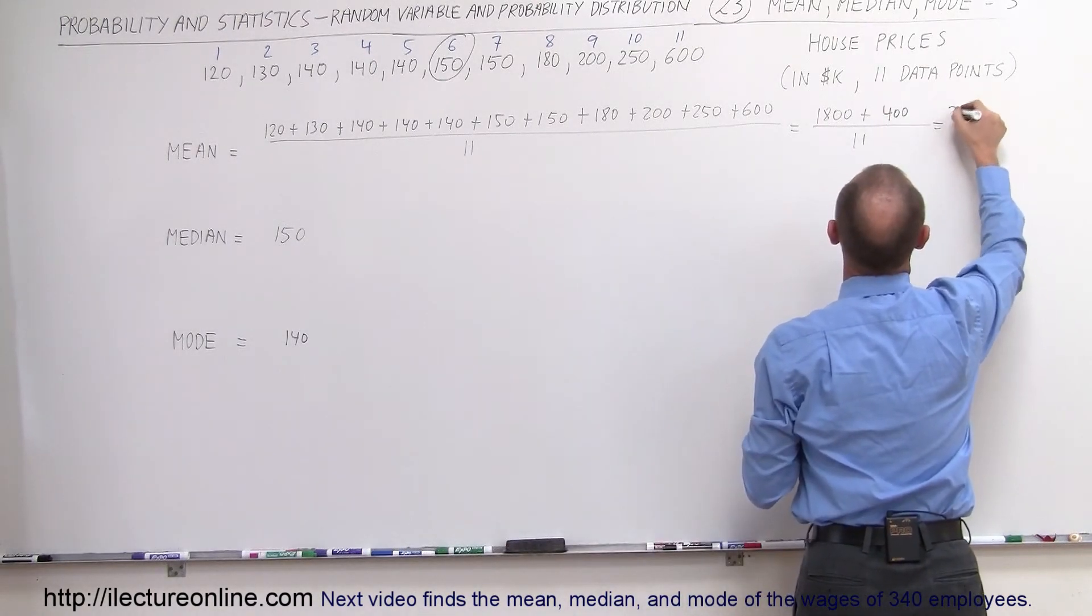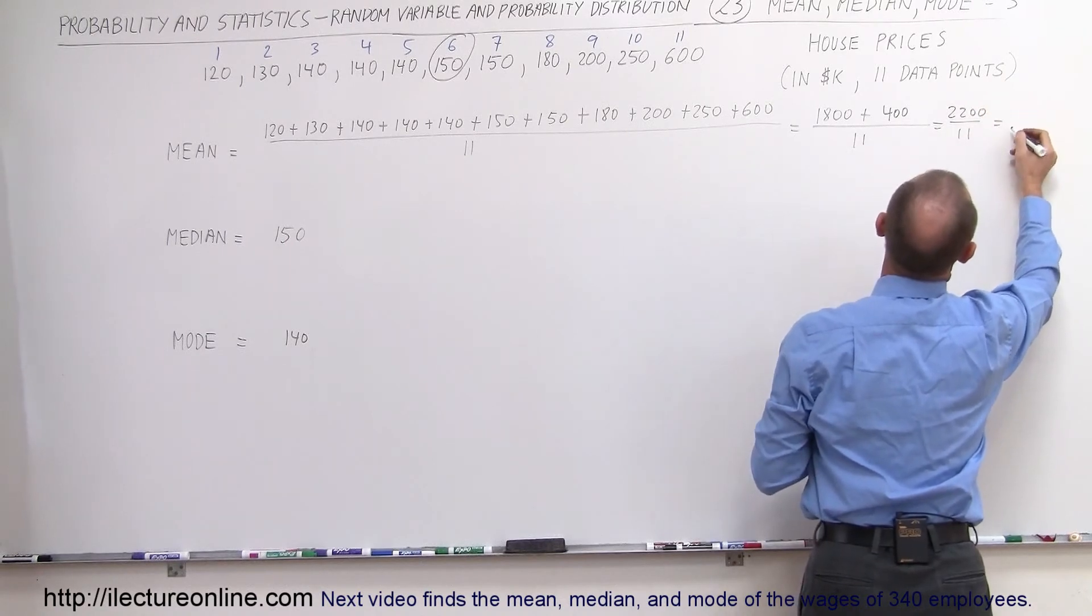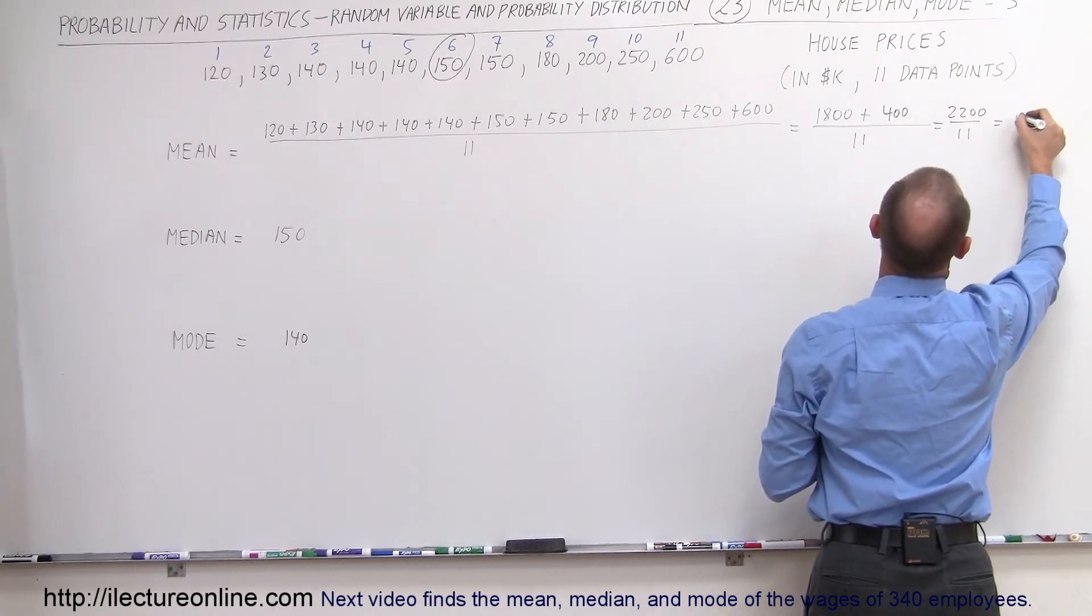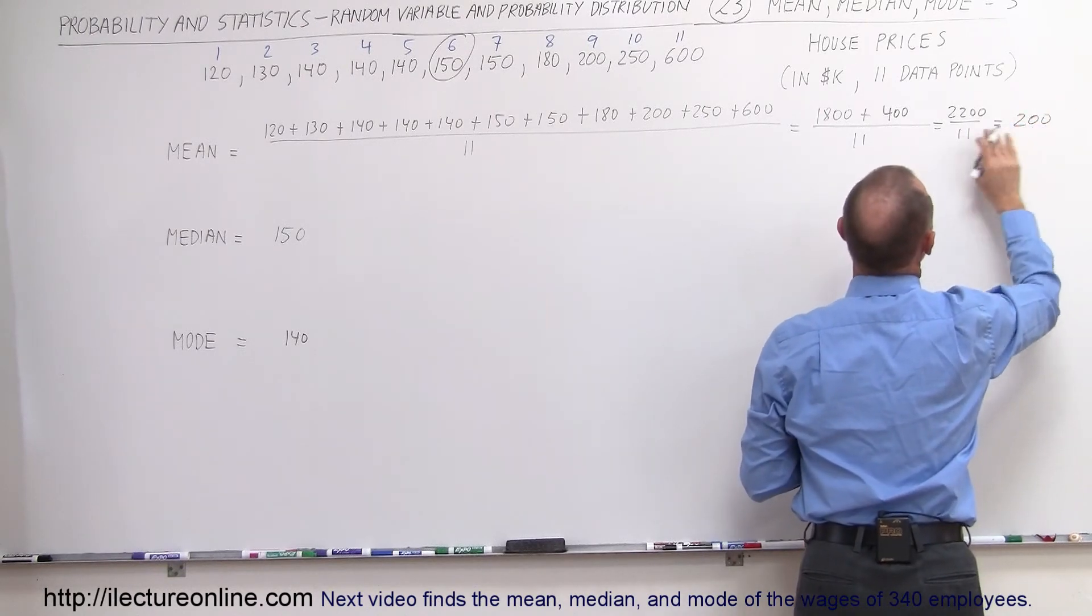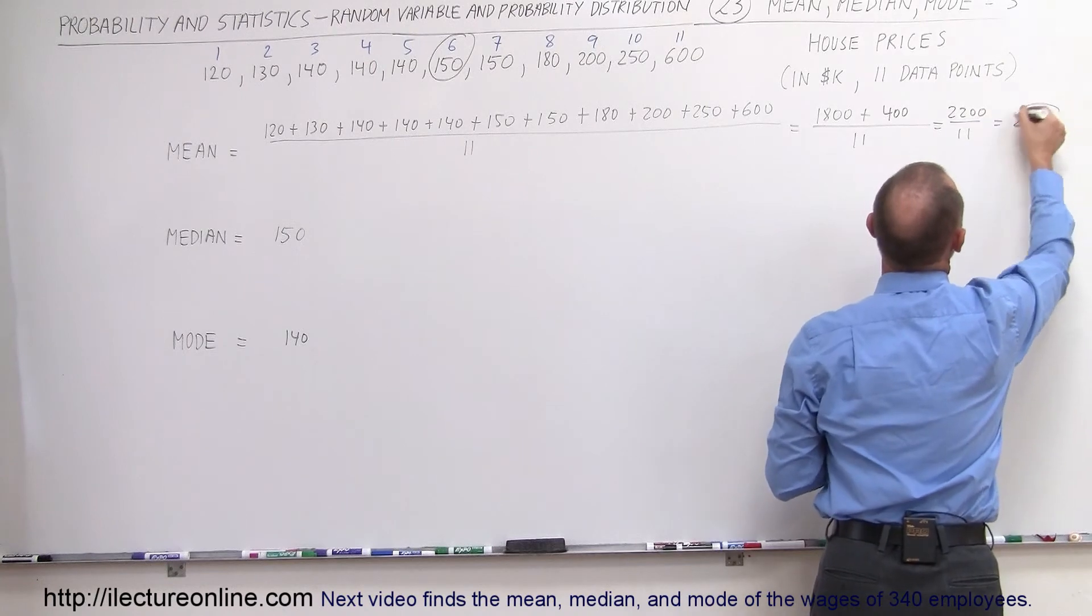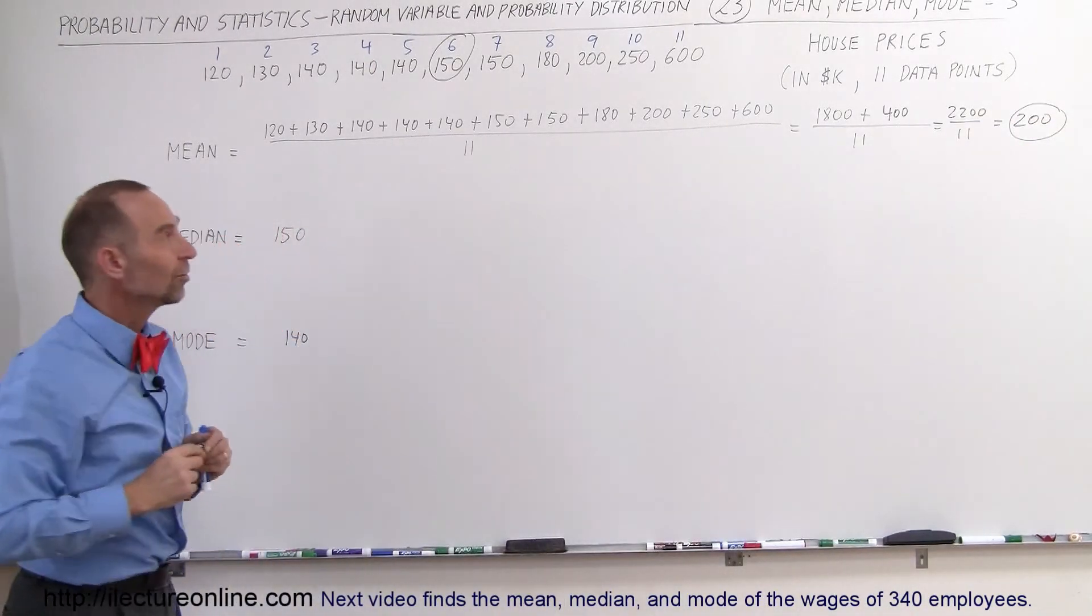So this is equal to 2,200 divided by 11, which is equal to 200,000. 200,000 times 11 gives you 2,200. So that's the average price of homes in that town.